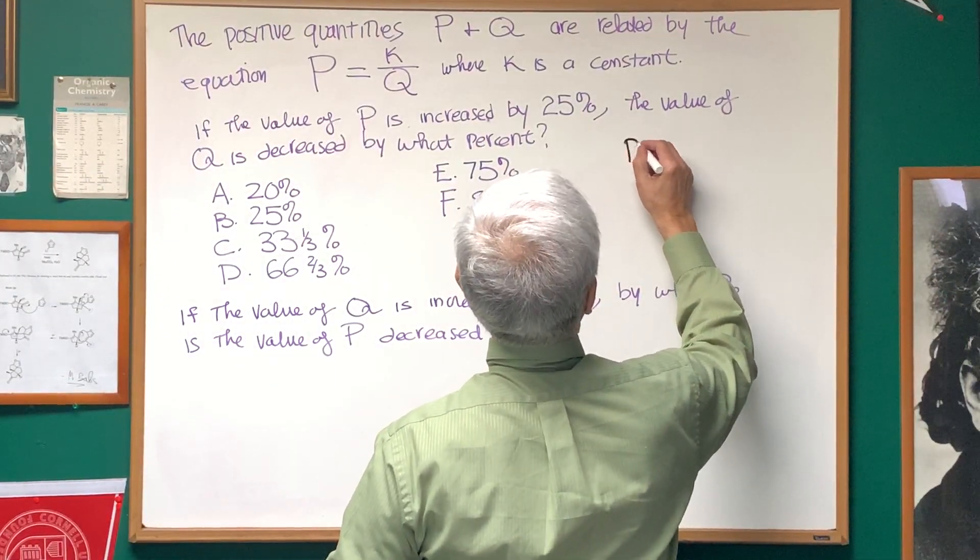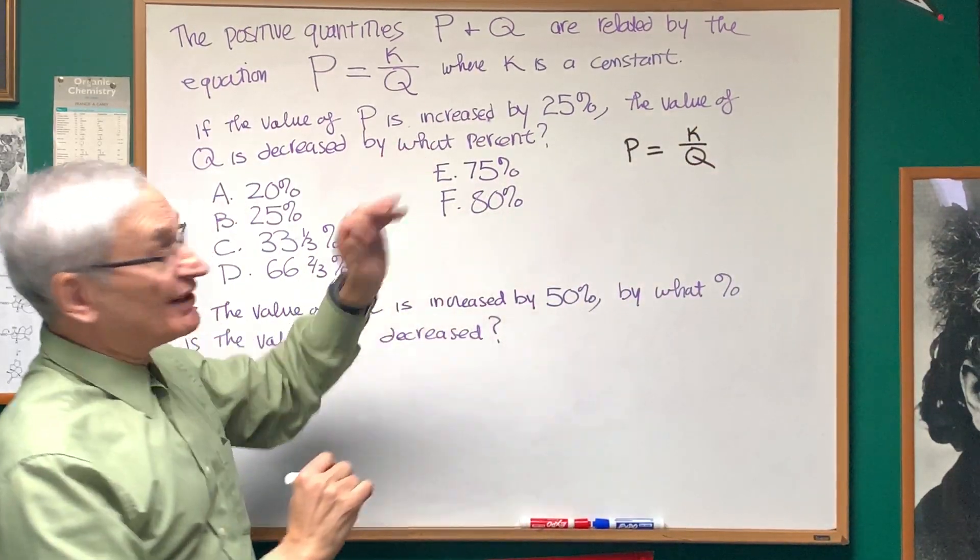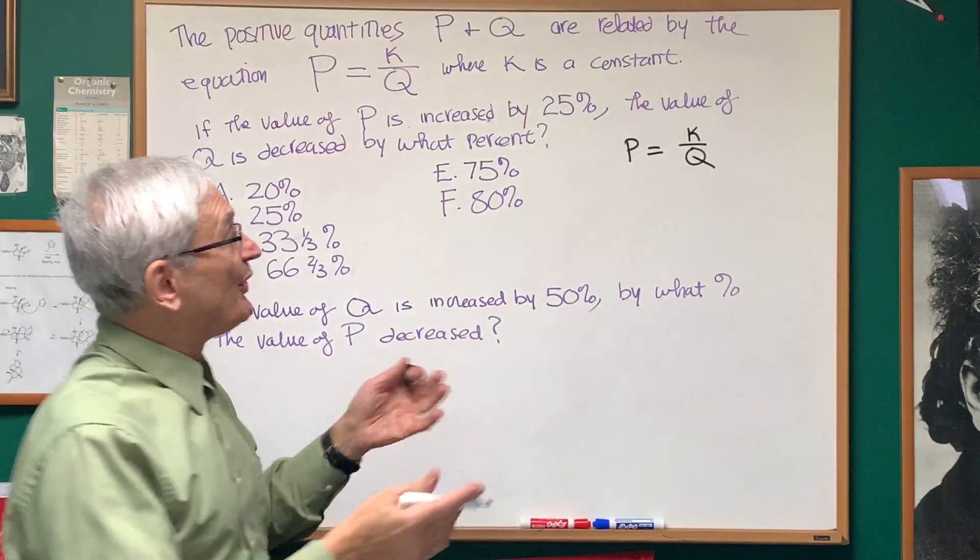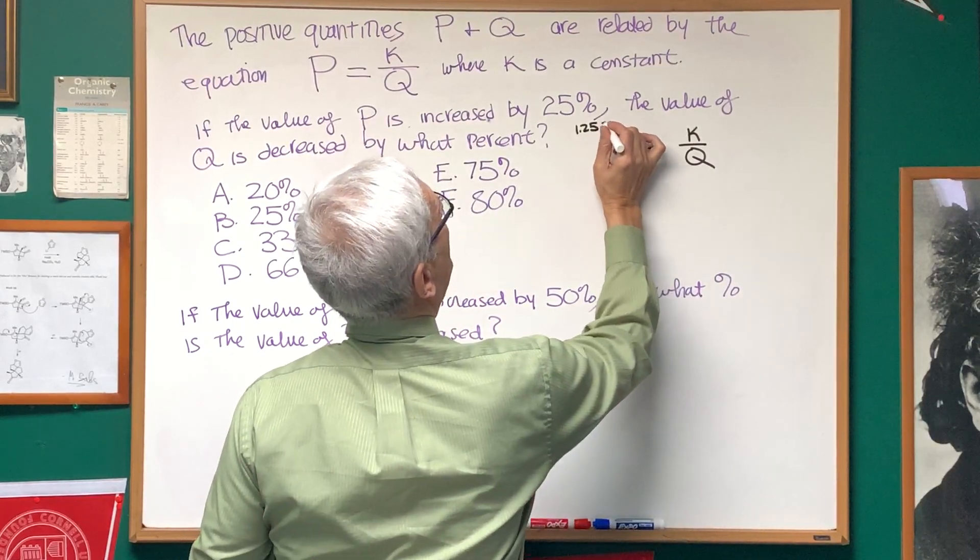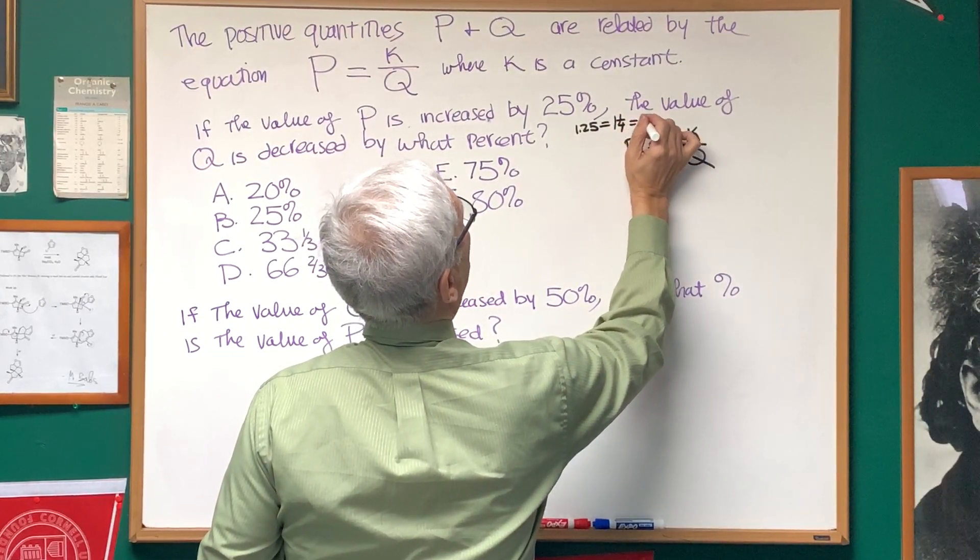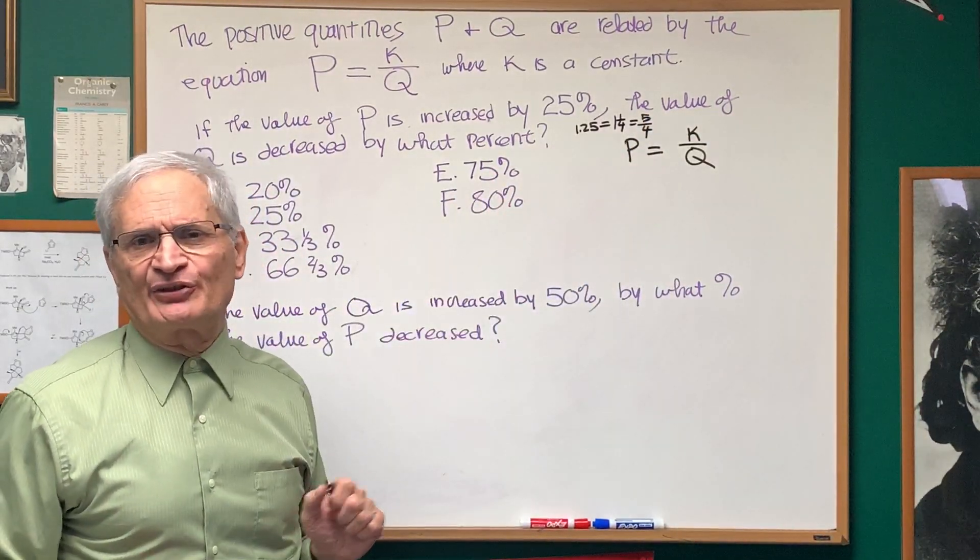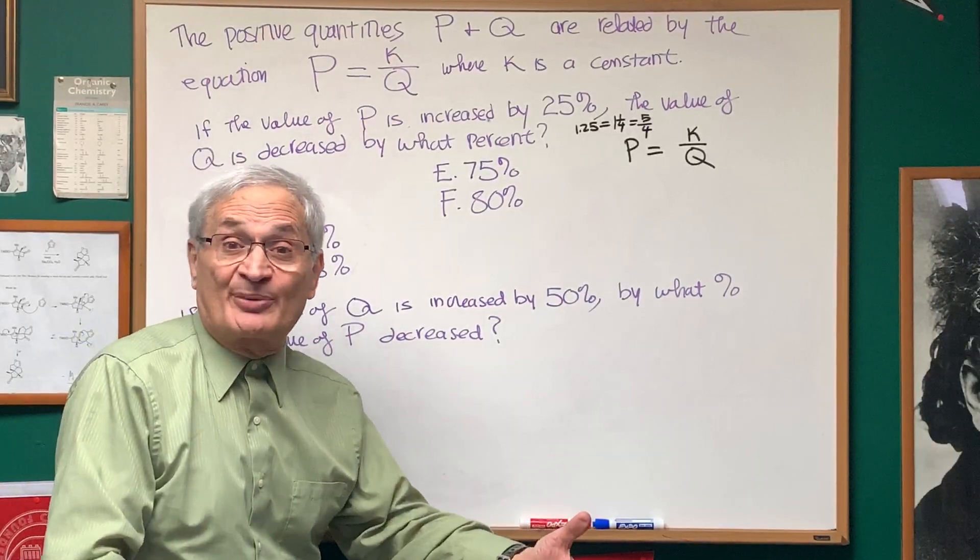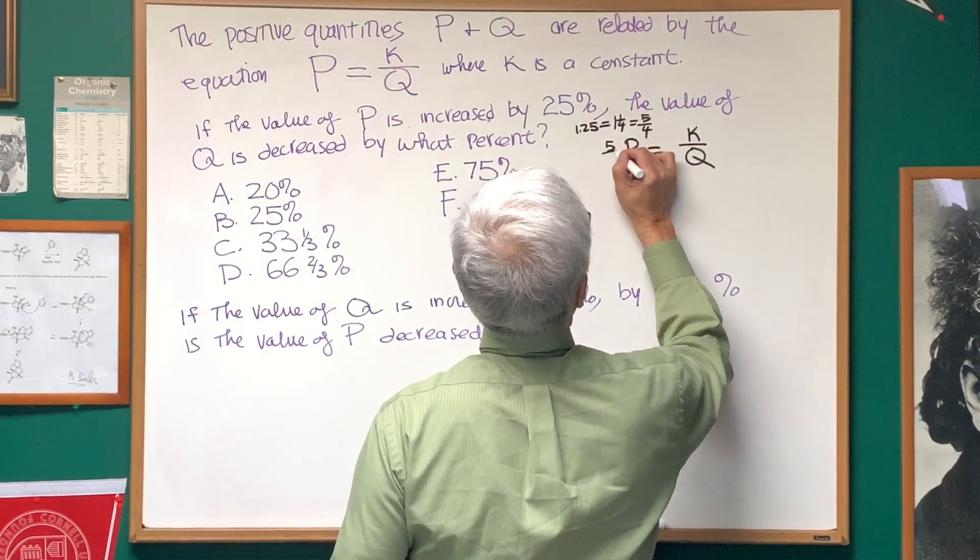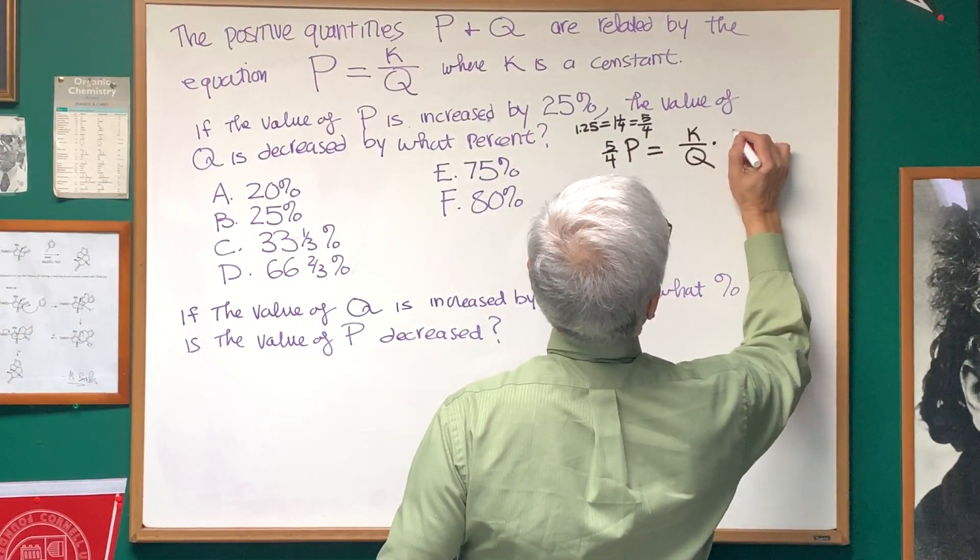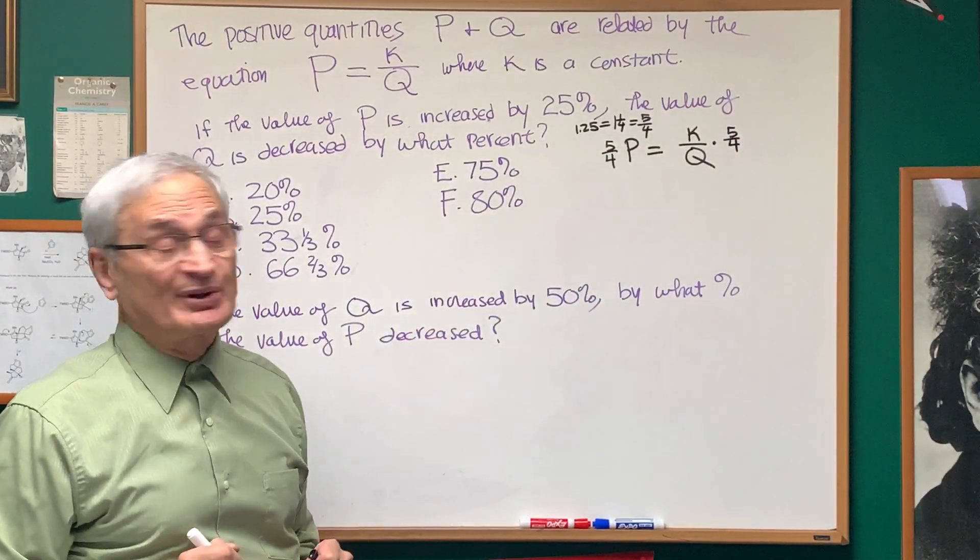Well, let's write the relation down. P is equal to K over Q. Now, P is increased by 25%. We can do that a number of ways. We can multiply this by 1.25, which is 1 and a quarter, and which is also equal to 5 fourths. It's easier, since we're expressing ourselves in fractions, to use the fraction form to represent that increase by 25%. So, we'll multiply the left side of the equation by 5 fourths, and the right side of the equation by 5 fourths. That increases P by 25%.